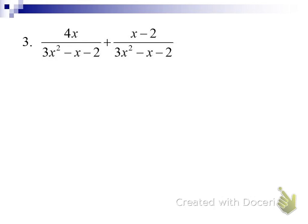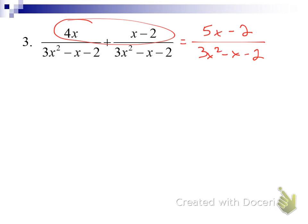As long as the denominators are the same, we can just add the numerators. 4x and x give you 5x, and you've got minus 2 over 3x² minus x minus 2. Now that we've added, we need to see if we can reduce — divide out common factors. We won't be able to tell until we know all the factors for the numerator and denominator, so we need to factor the denominator.